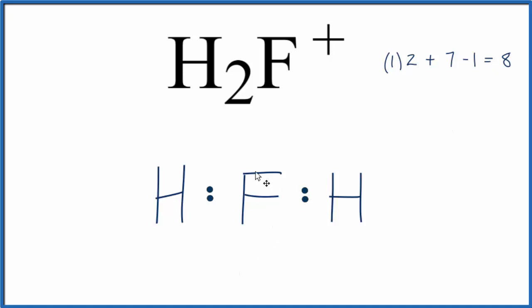We'll now go around and complete the octet for fluorine. So we'll put two here. We've used six, two more, and we've used eight. And that's all the valence electrons we have for this Lewis structure.